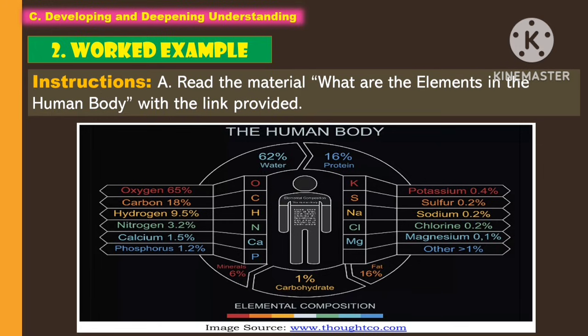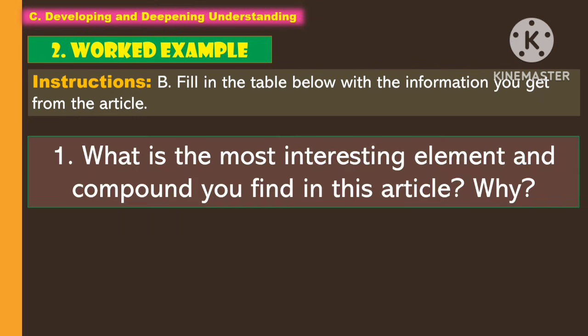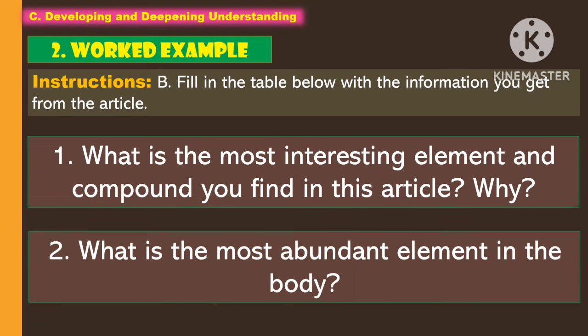For the instructions, read the material 'What are the elements in the human body?' with the link provided. Afterwards, fill in the table below with the information you get from the article. Then answer the following guide questions: first, what is the most interesting element and compound you find in this article, and why? Second, what is the most abundant element in the body?